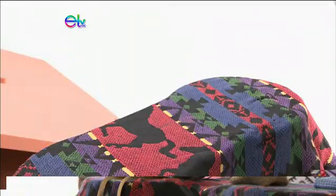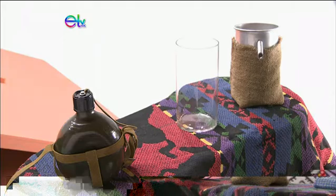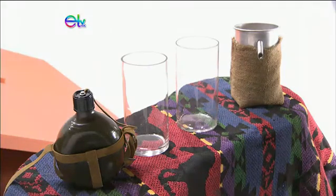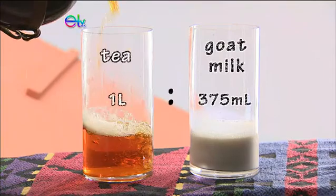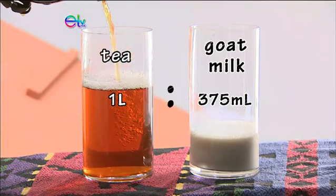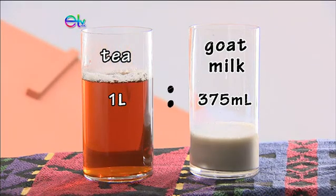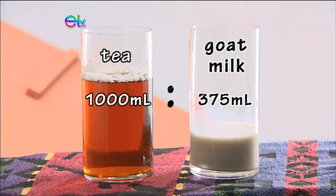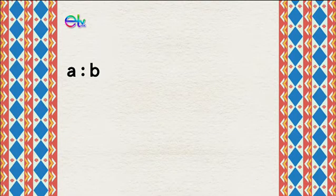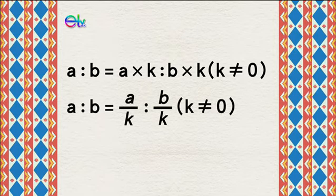In order to obtain a ratio, quantities of different units should be changed into quantities of the same unit. For example, when comparing 375 millilitres of goat milk with 1 litre of tea, since 1 litre is equivalent to 1000 millilitres, the ratio of 375 millilitres of goat milk to 1 litre of tea is 3 to 8. A ratio remains unchanged if each term is multiplied or divided by the same non-zero number. Hence, we can use multiplication or division to simplify a ratio.